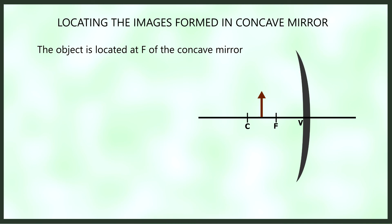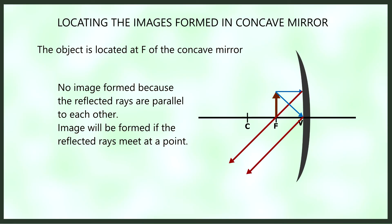When the object is placed exactly at the focus of the mirror, using the PF ray and V ray, we notice that the two reflected rays are parallel to each other. Parallel rays never meet at a point even if we extend them. This shows that there is no image formed because the reflected rays do not meet. Remember: an image forms only if there is a meeting point of the two reflected rays.